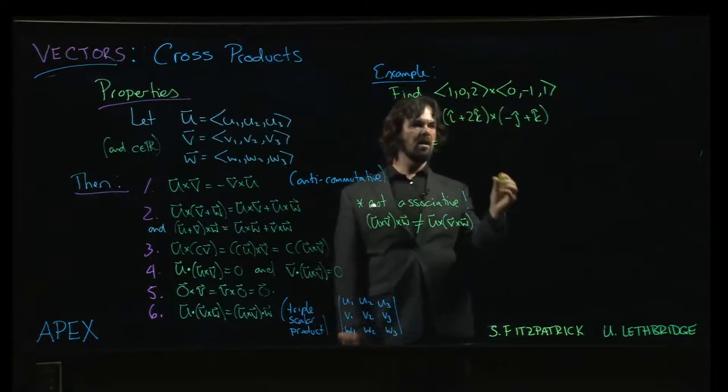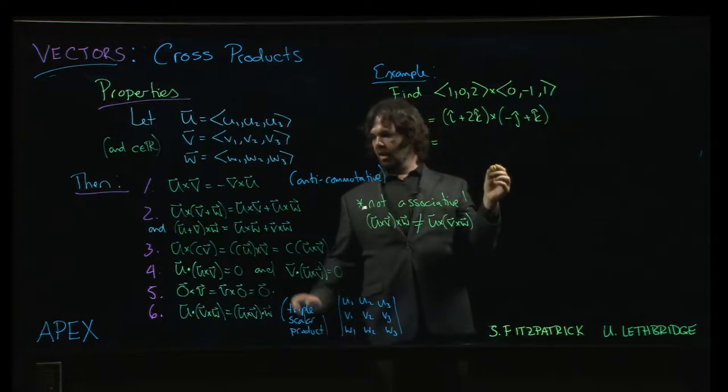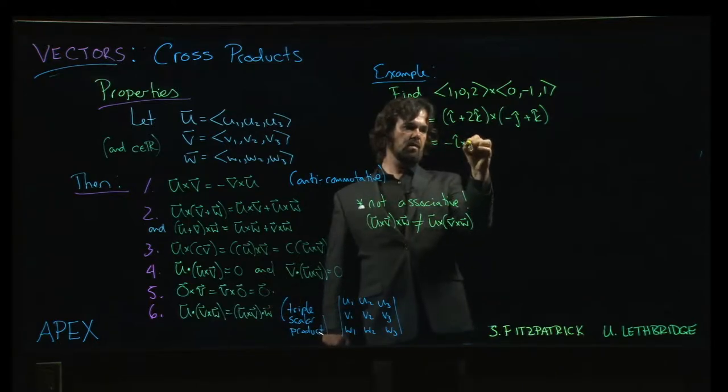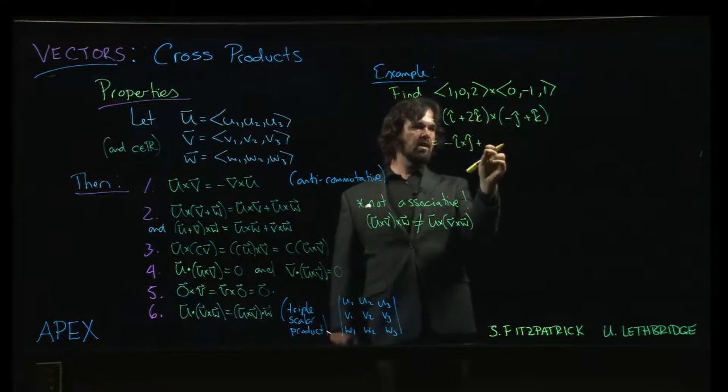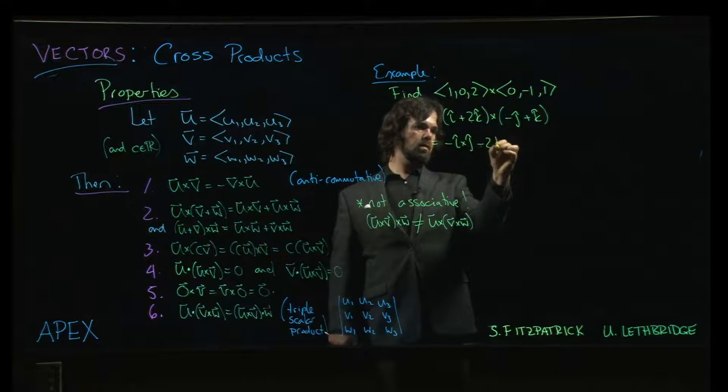So we can do i cross with minus j. And because of property 3, we can pull the minus sign out. So minus i cross j. And then we can do 2k cross minus j. Oh, but again, the minus sign comes out. So minus 2k cross j.